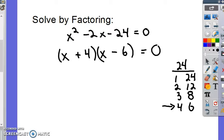And so now if I just do a quick check here. x times x is x squared. x times negative 6 is negative 6x. 4 times x is positive 4x. Those combined together, you get negative 2x. 4 times negative 6 is negative 24. All right, we're good.